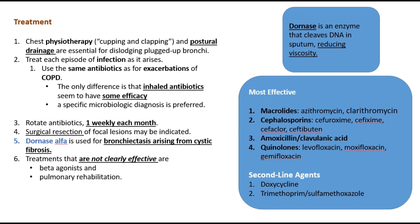In bronchiectasis patients, we need to rotate antibiotics one week on, one week off each month. Surgical resection of focal lesions may be indicated. Dornase is also used in bronchiectasis caused by cystic fibrosis; it helps reduce sputum viscosity and helps patients clear secretions.